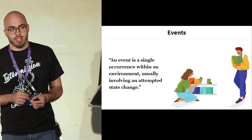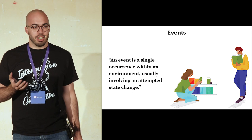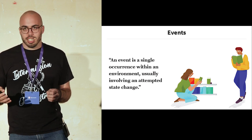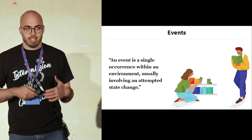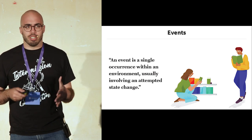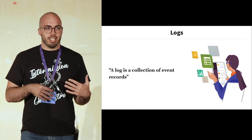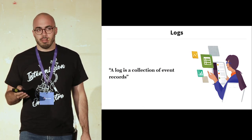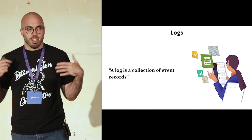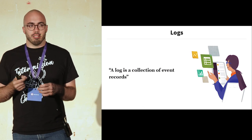We're here to talk about events and event pipelines. An event is a single occurrence within an environment, usually involving an attempted state change — something like an incoming HTTP request or a cache lookup. We associate these with some time and usually some effect from the state or some cause for that state change. We can collect these events into logs. In the case of an HTTP request, the log would include your client IP address, your request path, and all of that makes up the HTTP request.